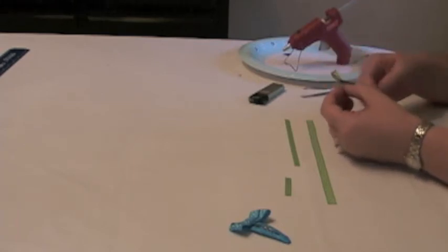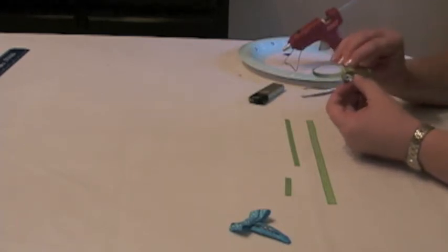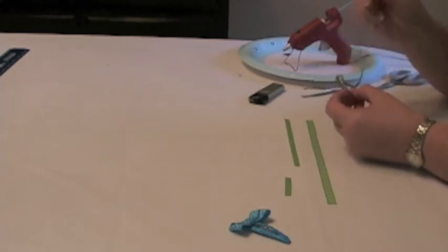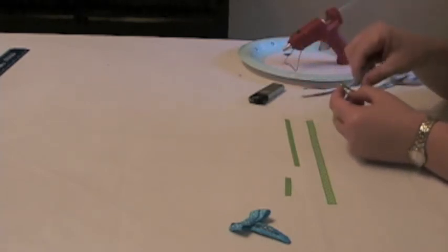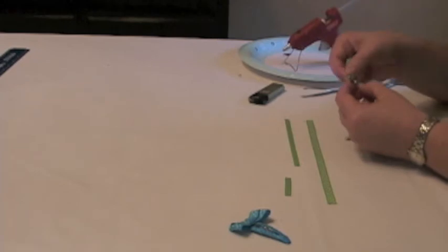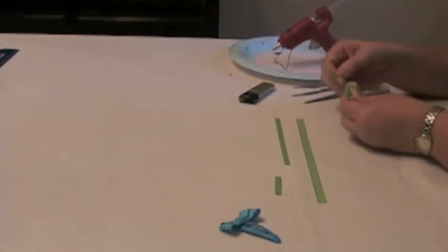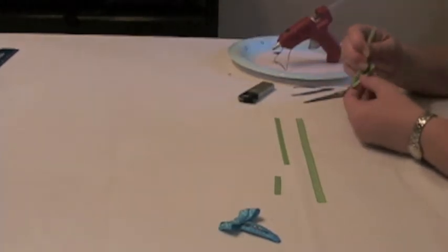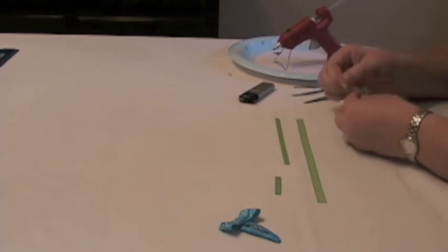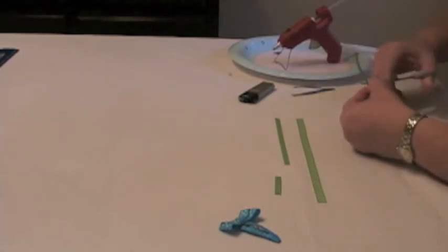And then you'll weave your ribbon around the clip till it's covered. After you've wrapped it around the edges of the snap clip and come to the end, you'll want to trim the excess.